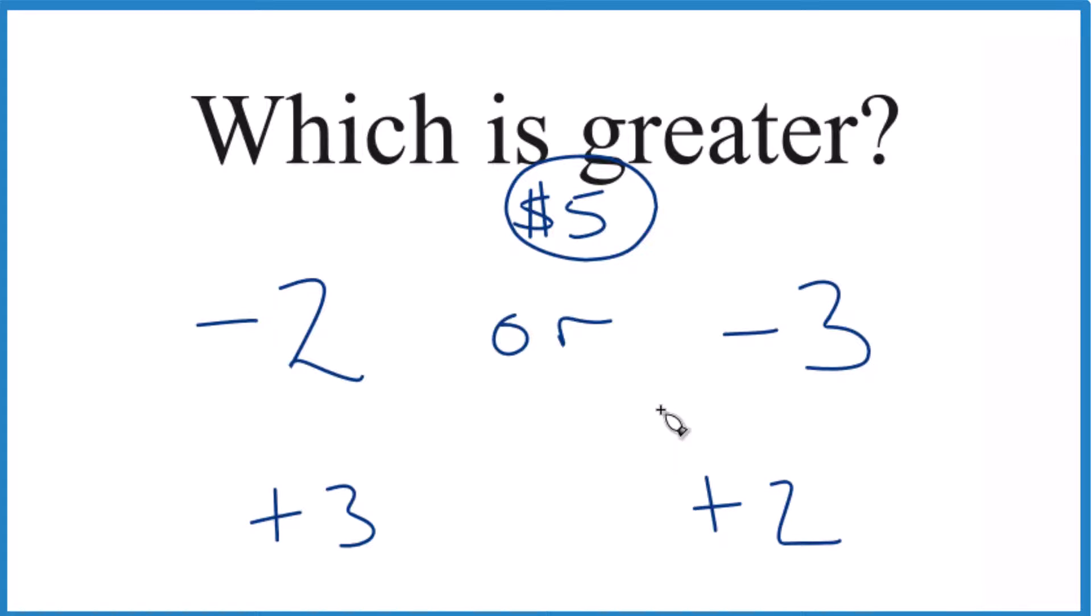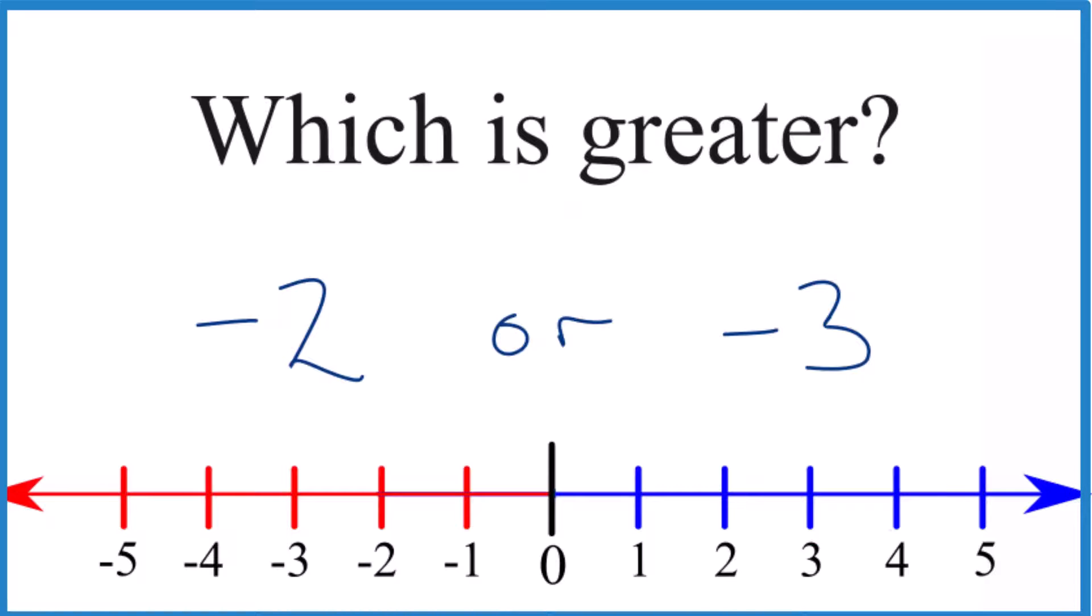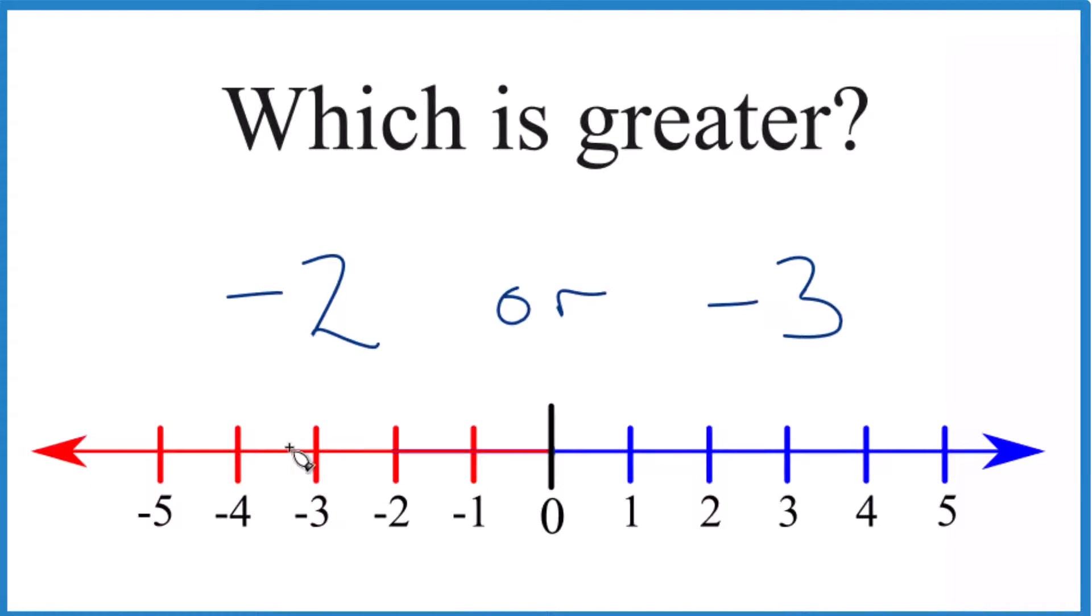Let's look at a number line, see if we can figure that out. So we have positive numbers going to the right, to the left, negative numbers.